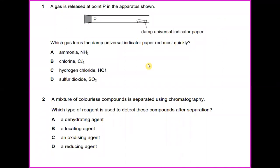Question number 1: A gas is released at point P in the apparatus shown. Which gas turns the damp universal indicator paper red most quickly? The answer will be hydrogen chloride.